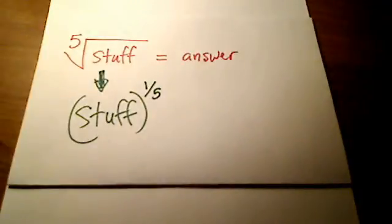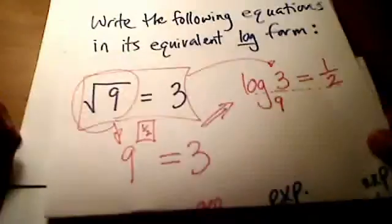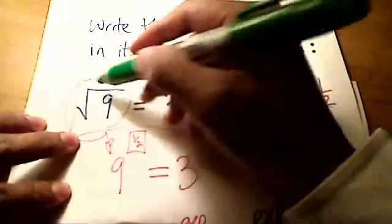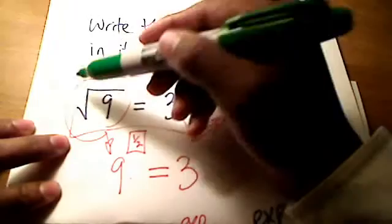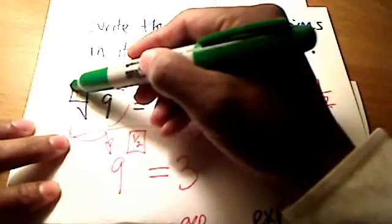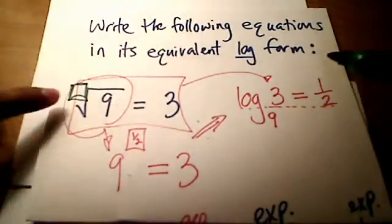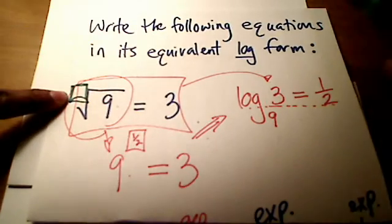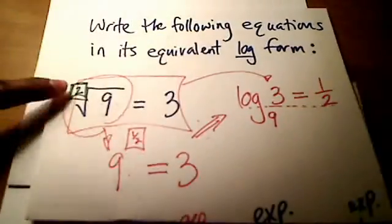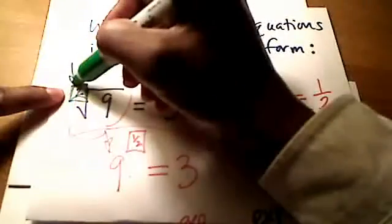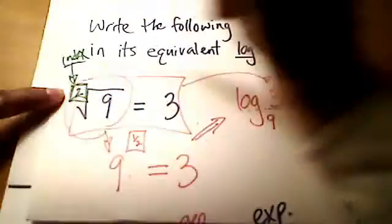All right, we could rewrite it as stuff raised to the one-fifth. Remember a moment ago we had the square root of 9? And what's actually going on here, let me bring this back for a second. What was actually going on with the square root of 9 is there is an index sitting right here in this little box. And if you don't see a number sitting in that box, then it's an understood 2. So that's called an index right there. If you don't see the index, it's an understood 2.